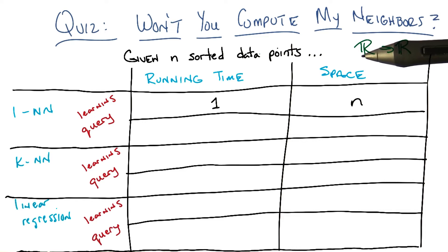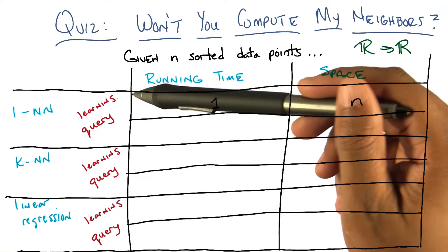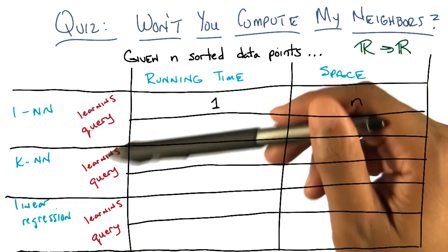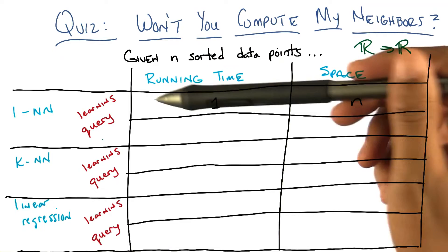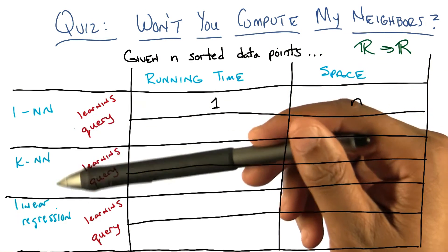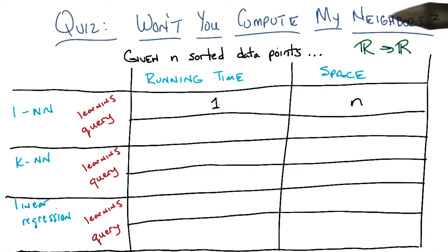This is the space that's representing the classifier or the regression after training. The question of after training is important. You'll notice that I've divided each of these algorithms into two phases: there's the learning phase — how much time it takes to learn, how much space you need to learn — and then there's the query phase. When I give you some new value and you have to output an answer, what's the running time for that and what are the space requirements? Big O is implicit — I'm not going to make you write out big O.